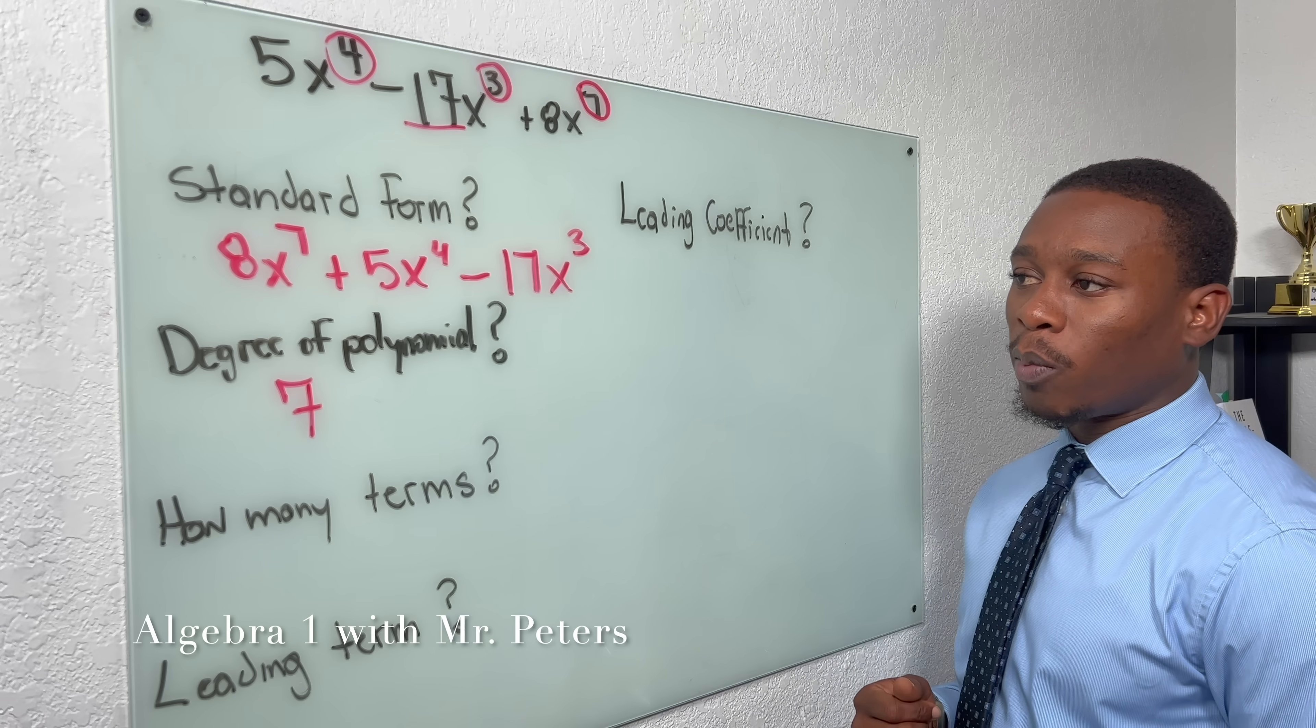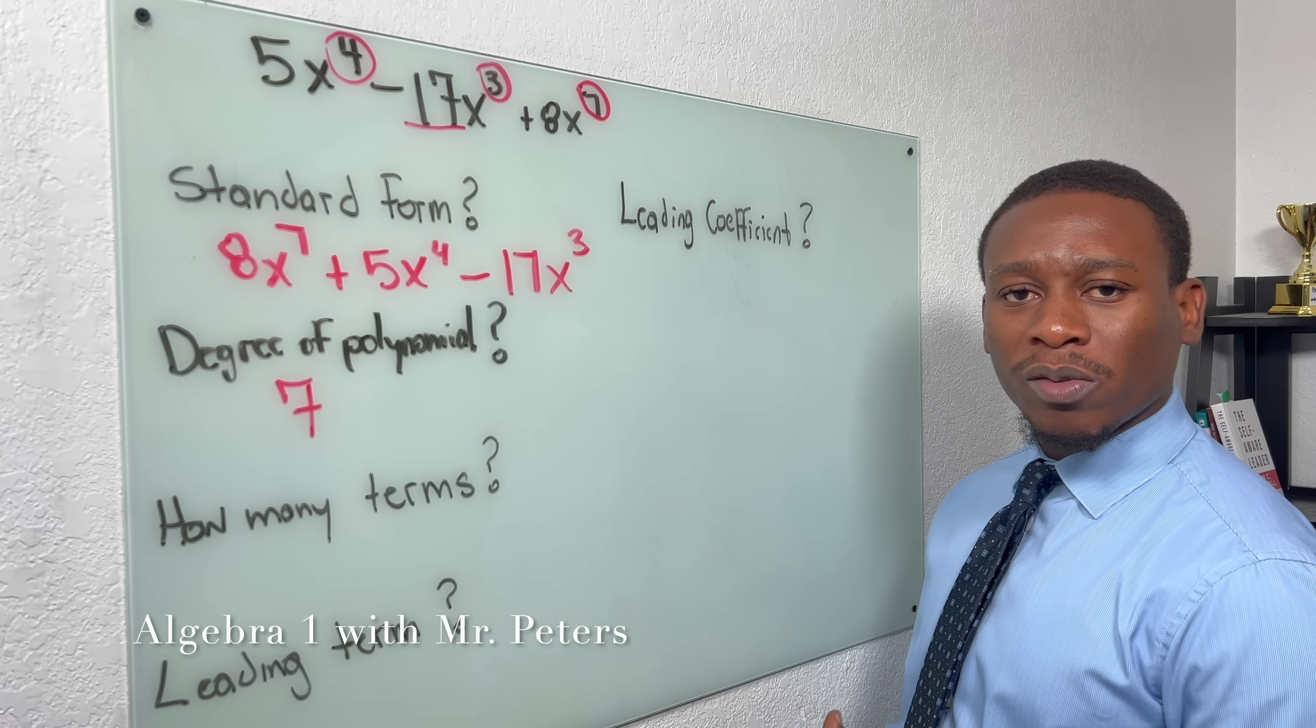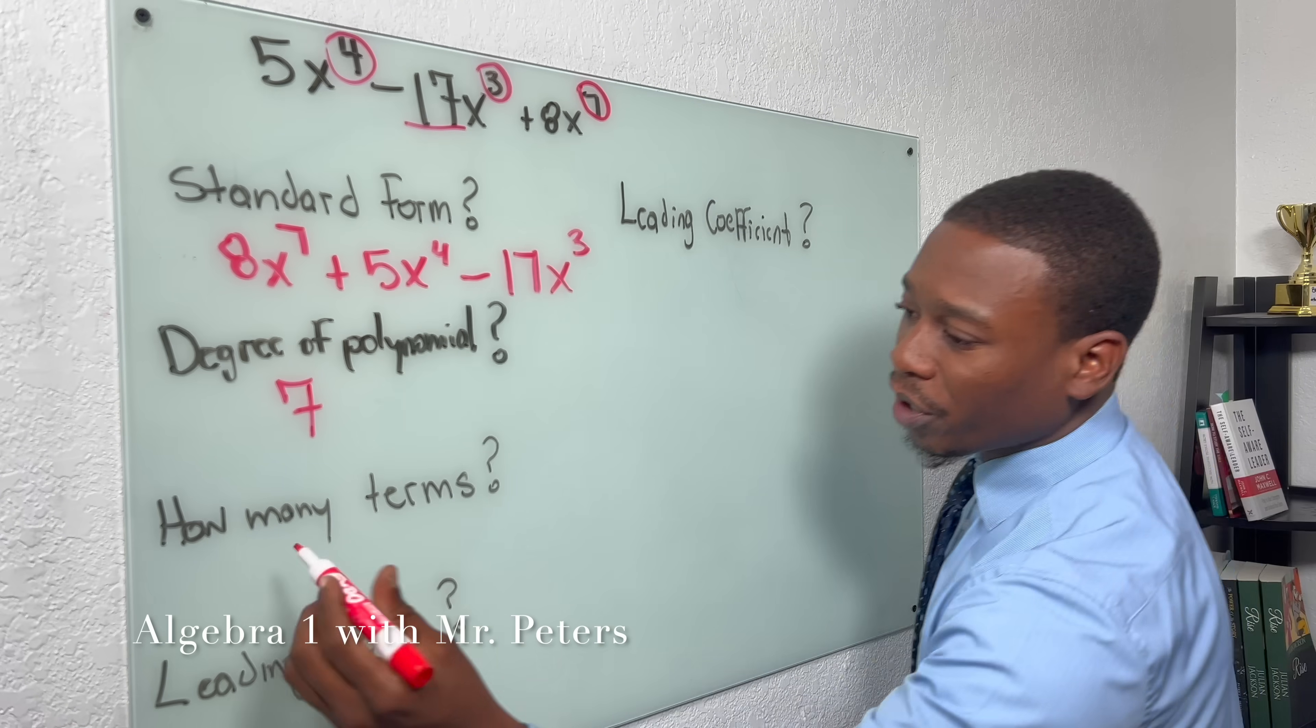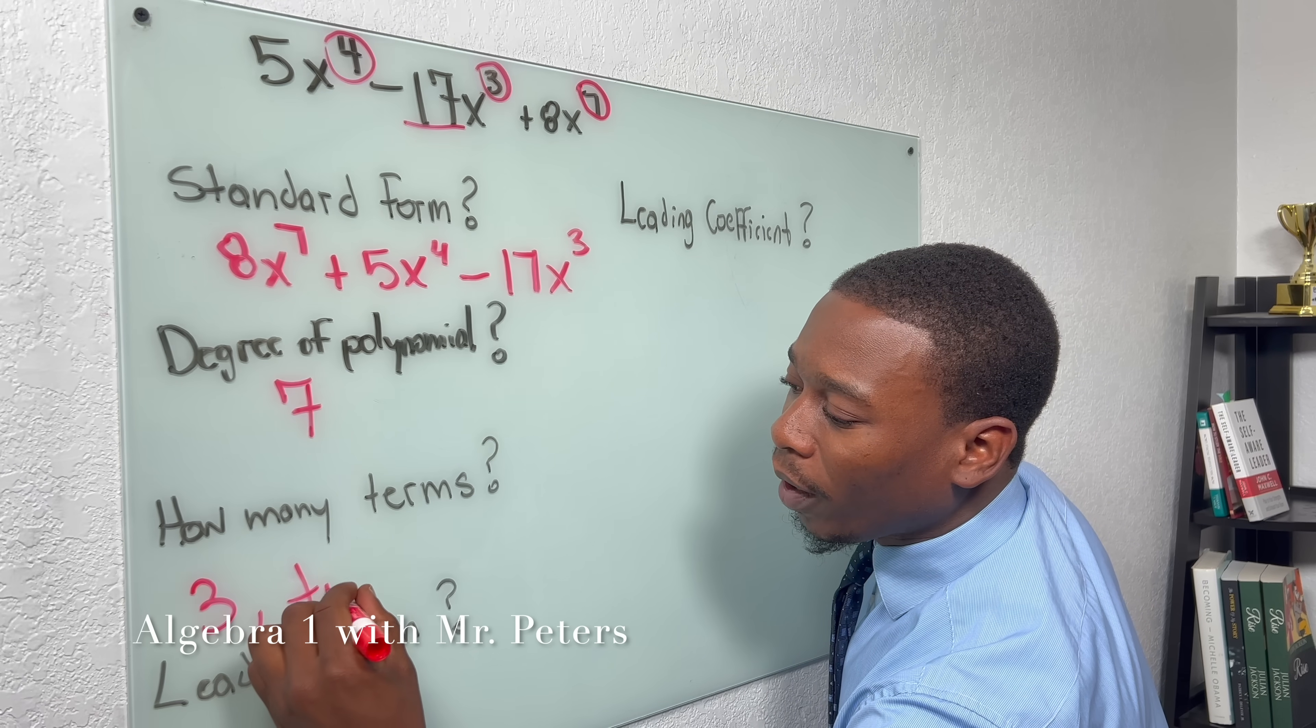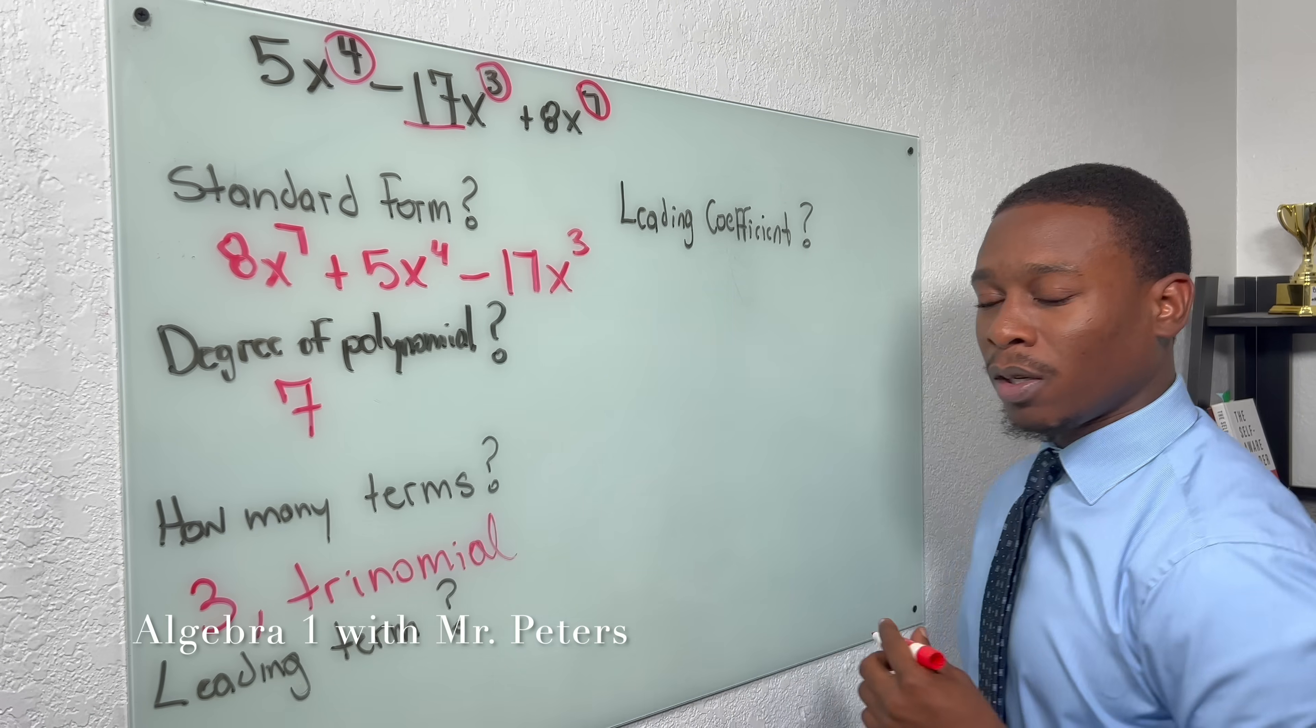So here, we're back at this problem, and they say, how many terms? So just remember, terms are separated by operation symbols. So we have one term, two terms, three. And the correct word would be a trinomial, right? Because it has three terms.